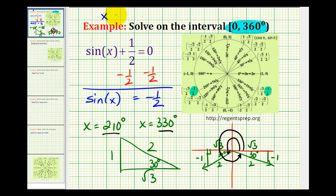So we could say x equals 210 degrees plus 360 degrees times some integer k, where k is 0, 1, 2, 3, or negative 1, negative 2, negative 3, and so on.